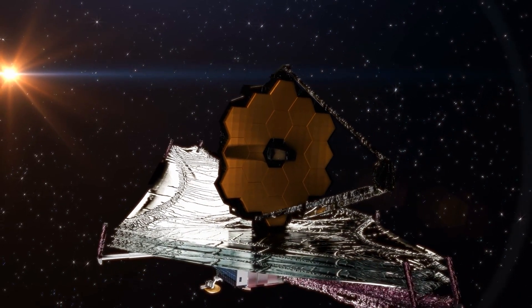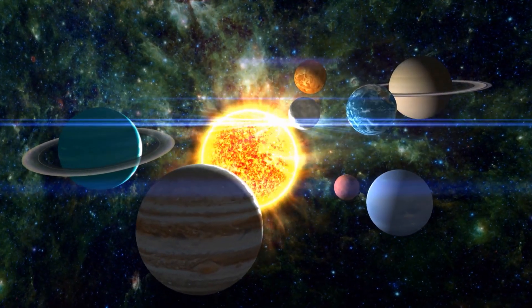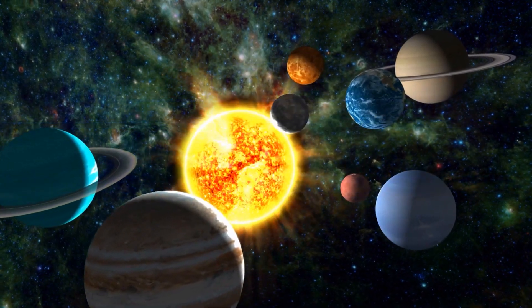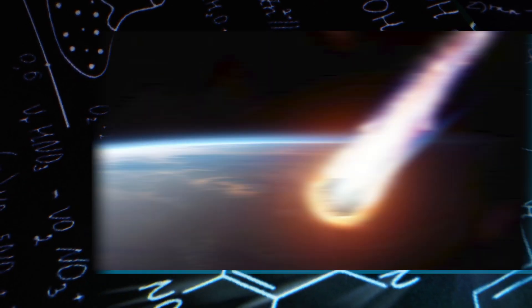The JWST isn't confined to investigating distant realms. It also explores celestial bodies in our cosmic neighborhood, such as planets, moons, asteroids, and comets. This study of their composition and atmospheric makeup yields valuable insights into their origins and evolution.